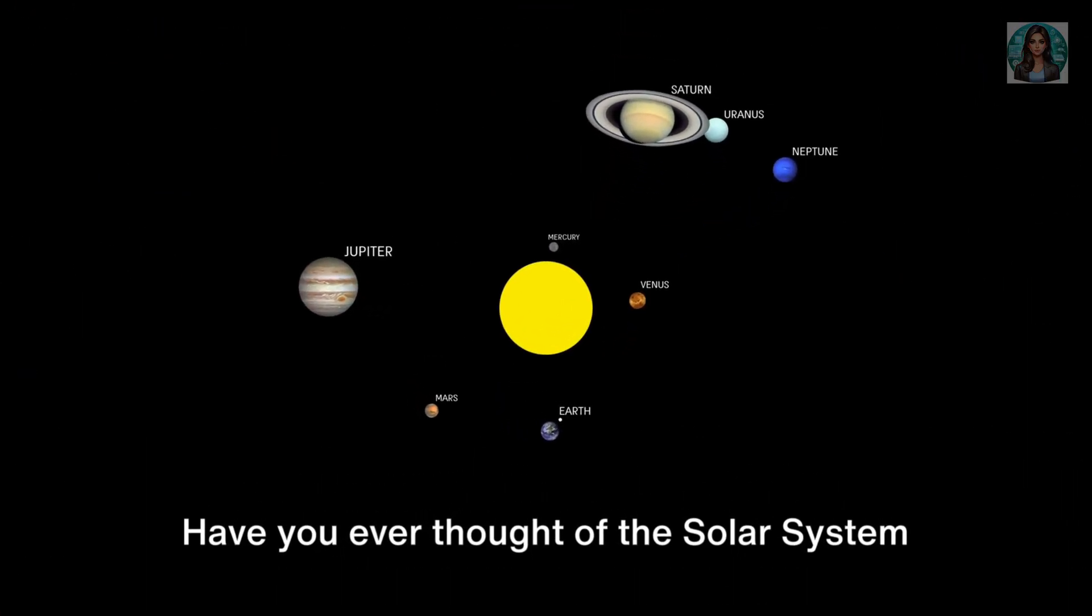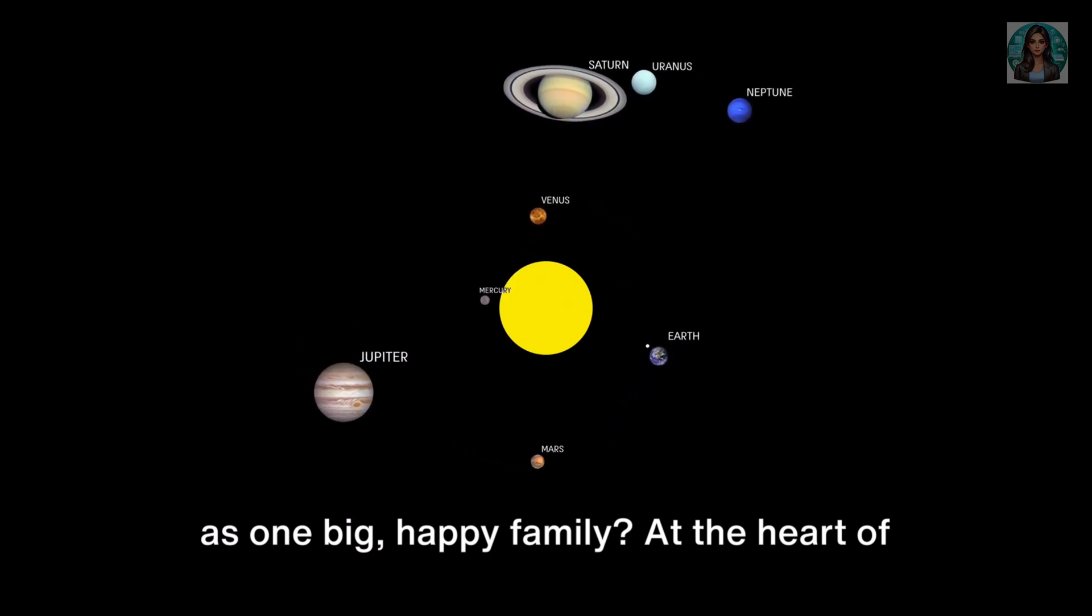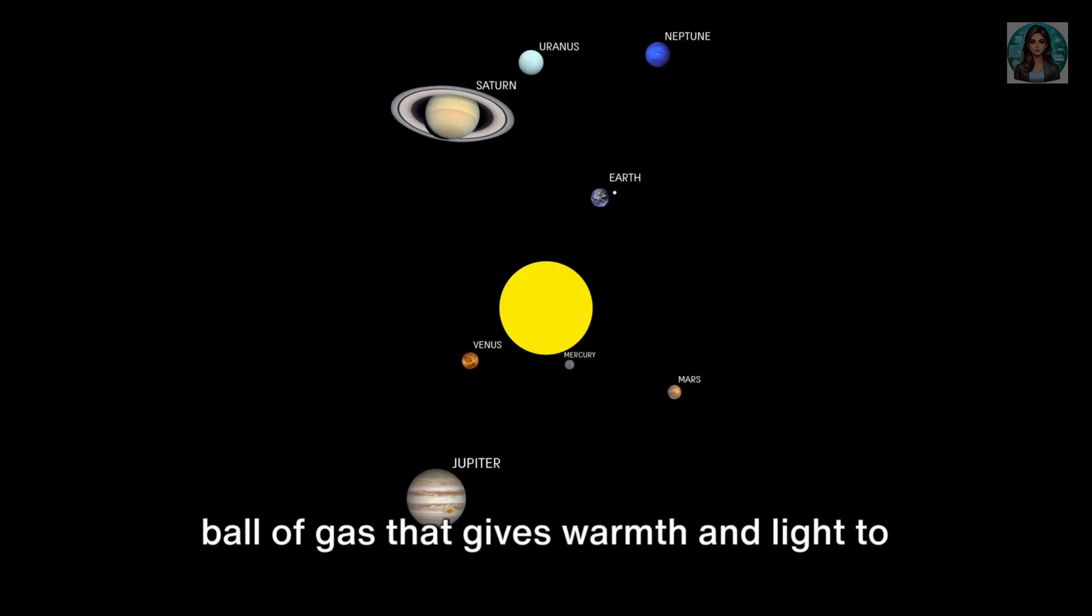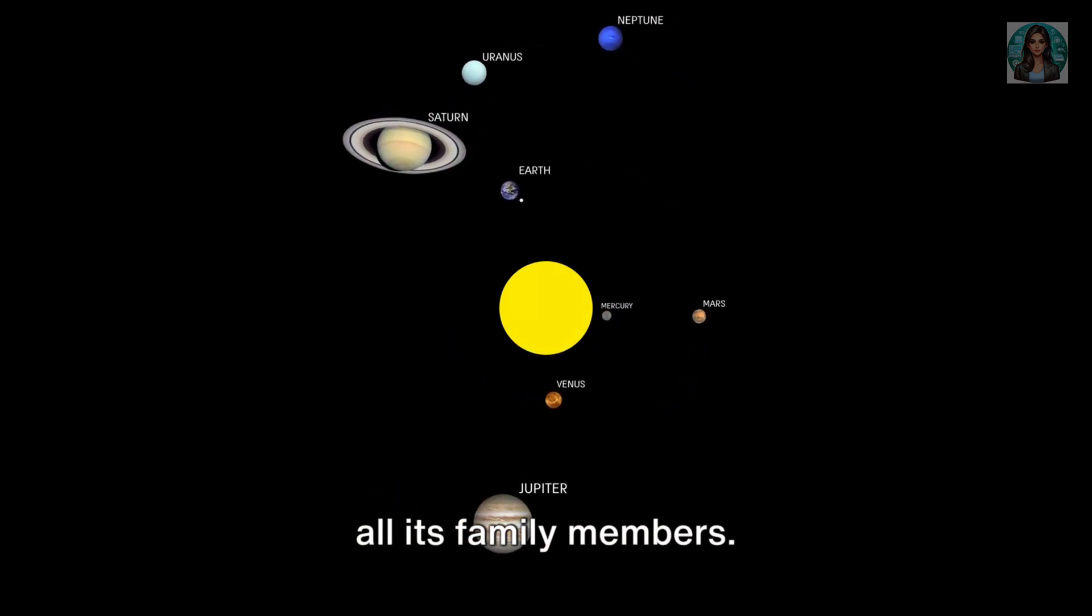Have you ever thought of the solar system as one big happy family? At the heart of this family is the sun, a massive glowing ball of gas that gives warmth and light to all its family members.